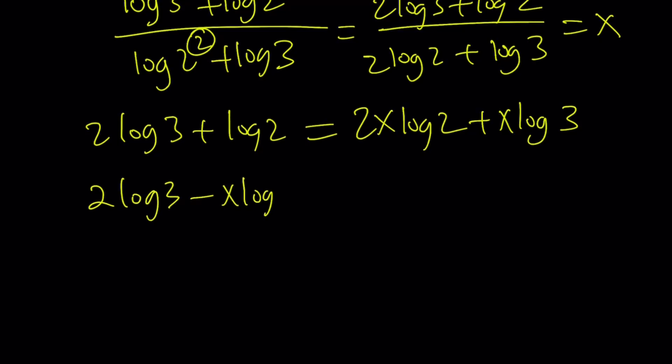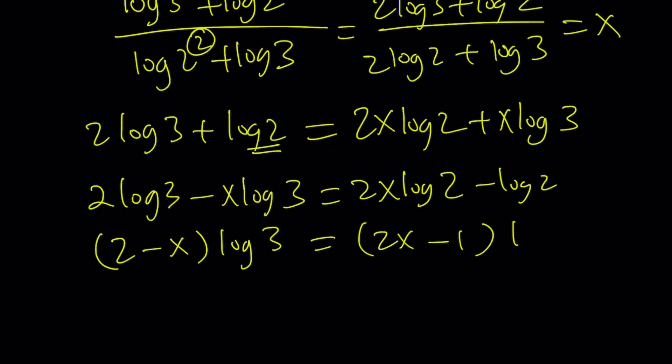Minus x log 3 and then put the log 2 on the right-hand side. It's going to be 2x log 2 minus log 2. And then factor out log 3.